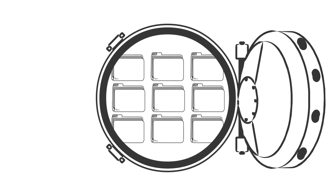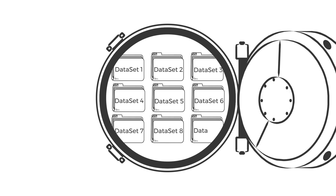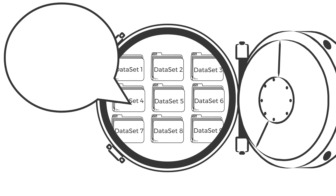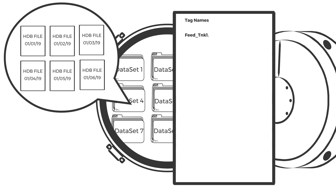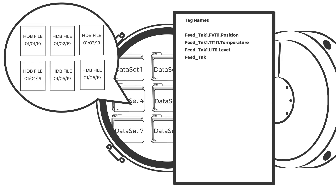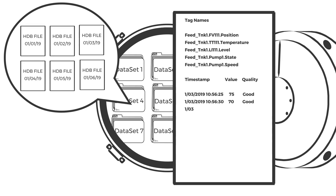When Historian saves your data, it organizes it into data sets. A data set is a collection of sensors, or tags, that you choose to group together. Since you license Historian only by tag count, you can create as many data sets as you need. Within each data set, Historian writes to a historical database file, or HDB for short. The HDB contains all the tag names and records the timestamp for every value change as well as its quality score.